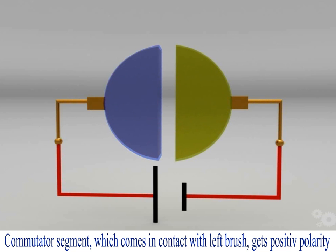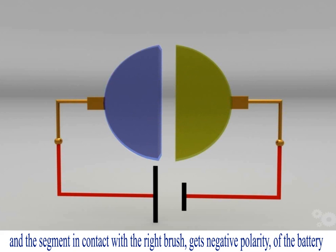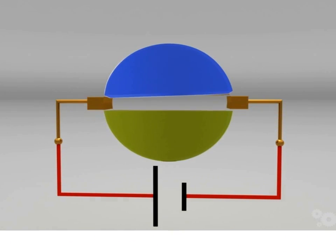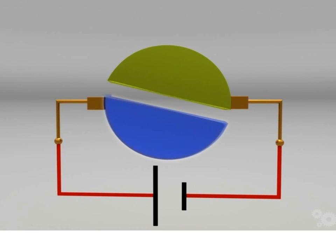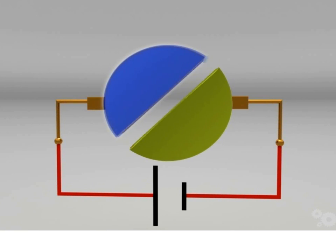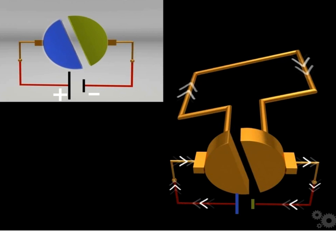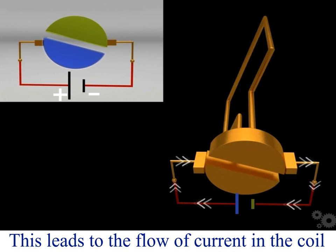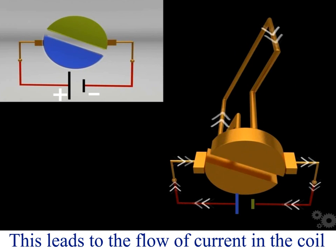The commutator segment in contact with the left brush gets positive polarity, and the segment in contact with the right brush gets negative polarity from the battery. This leads to current flow in the coil.